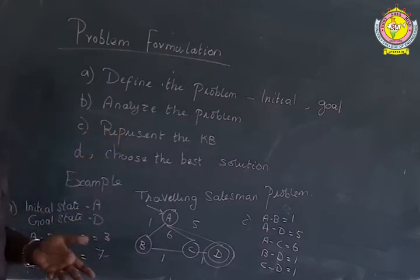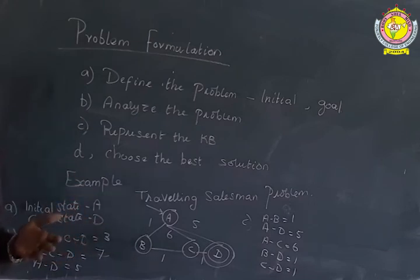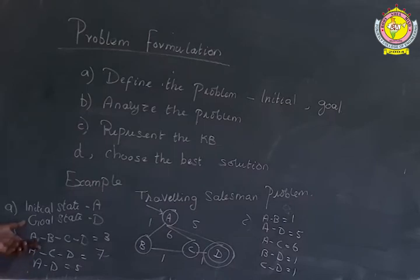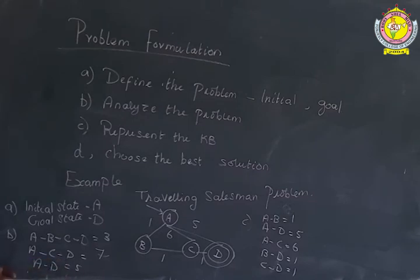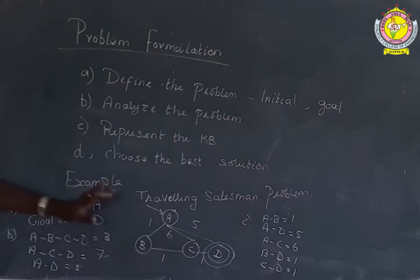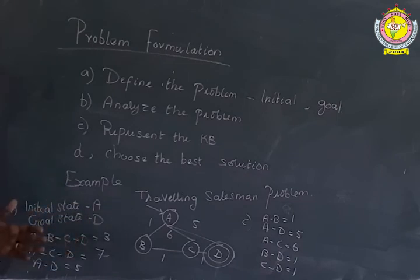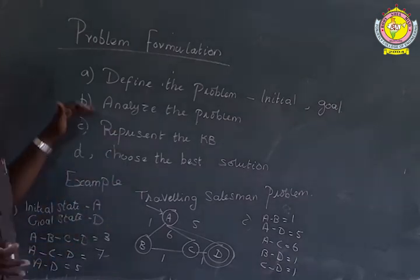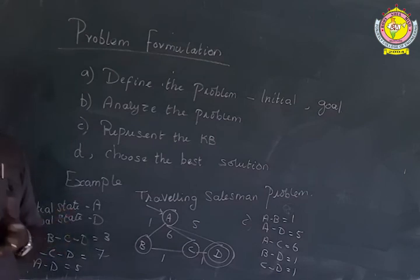The fourth step is to find the best solution. We have already analyzed that there are three possible solutions: the first path A → B → C → D has a path cost of 3, the second path A → C → D has a path cost of 7, and the third path A → D has a path cost of 5. Among these, the first path A → B → C → D is the best since it has the lowest path cost of 3. So not only for the traveling salesman problem, but whatever the problem is given, with these four steps we will be able to find a solution.